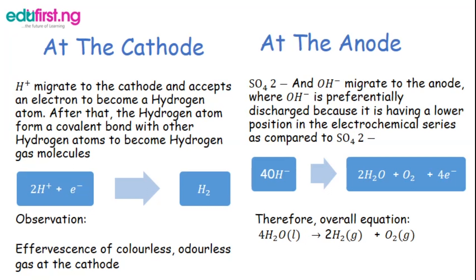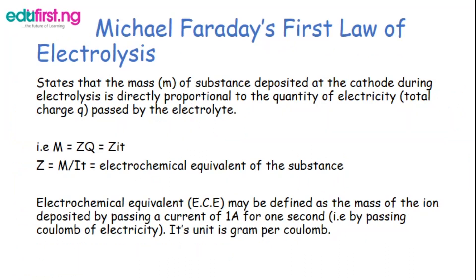The hydroxyl ions migrate to the anode, where the hydroxyl ion is preferentially discharged because it has a lower position in the electrochemical series compared to the sulfate ion (SO₄²⁻). This gives us two molecules of water and one molecule of oxygen gas. Therefore the overall equation becomes: two water molecules give two molecules of hydrogen gas and one molecule of oxygen gas.